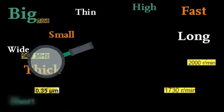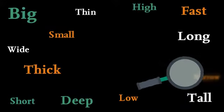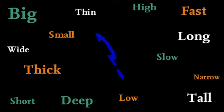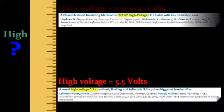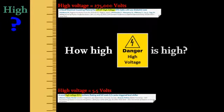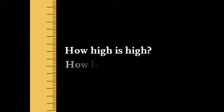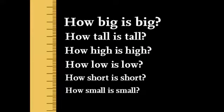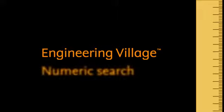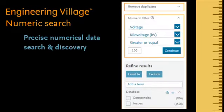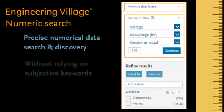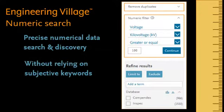Without the ability to search for numerical data, you are restricted to using keywords such as high, low, large, deep, and thick or thin. These terms can be quite subjective. What one person considers high may be low to another. Just how high is high, and how low is low? The numeric search filter in Engineering Village provides step-by-step guidance through the search refinement process to facilitate precise numerical data search and discovery without having to rely on noisy and subjective keywords.